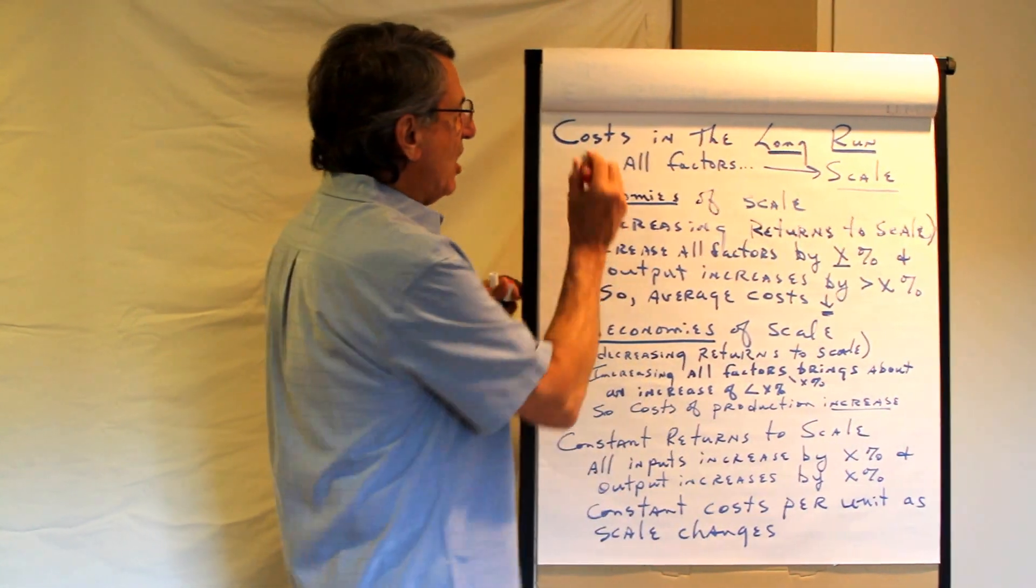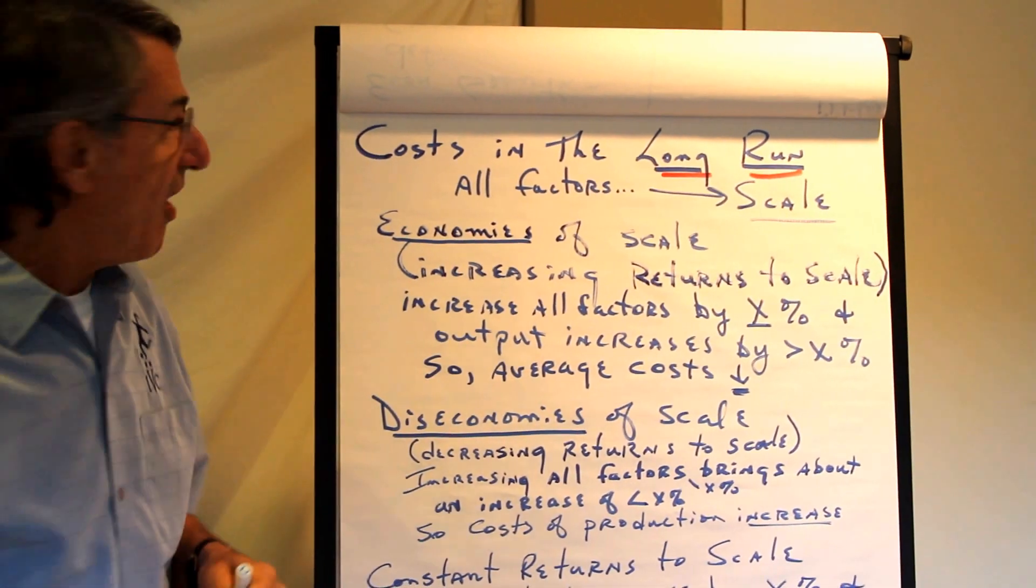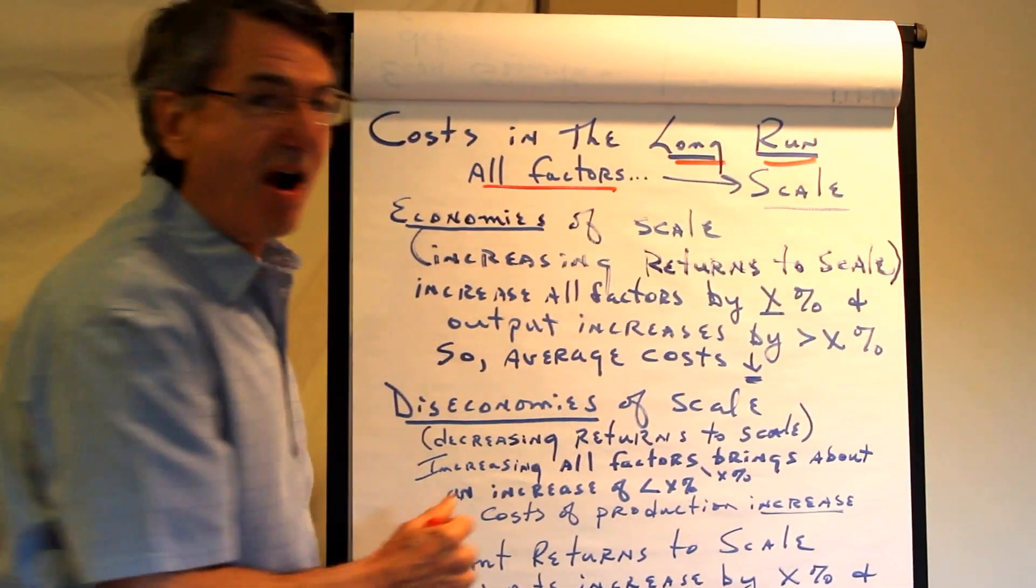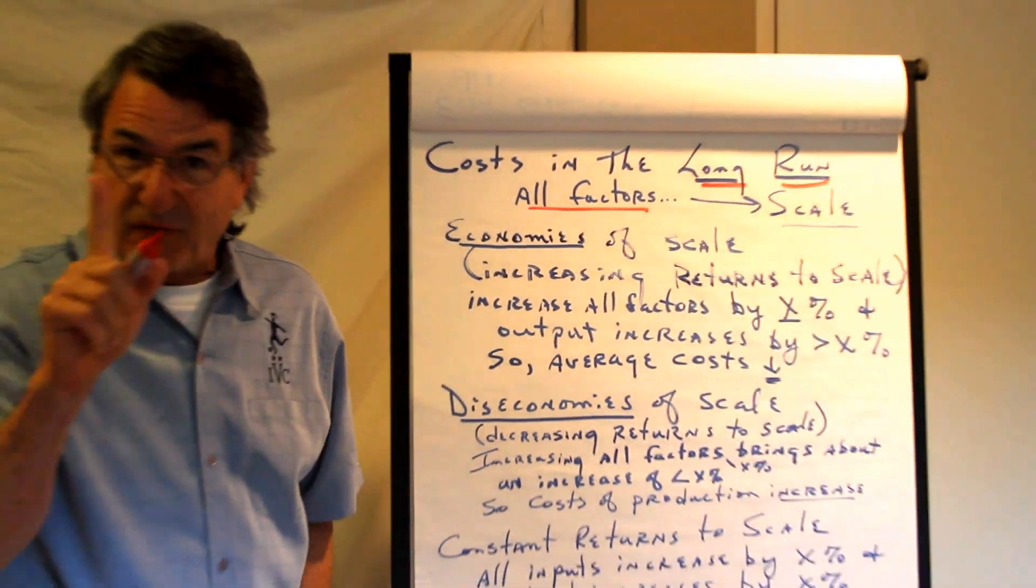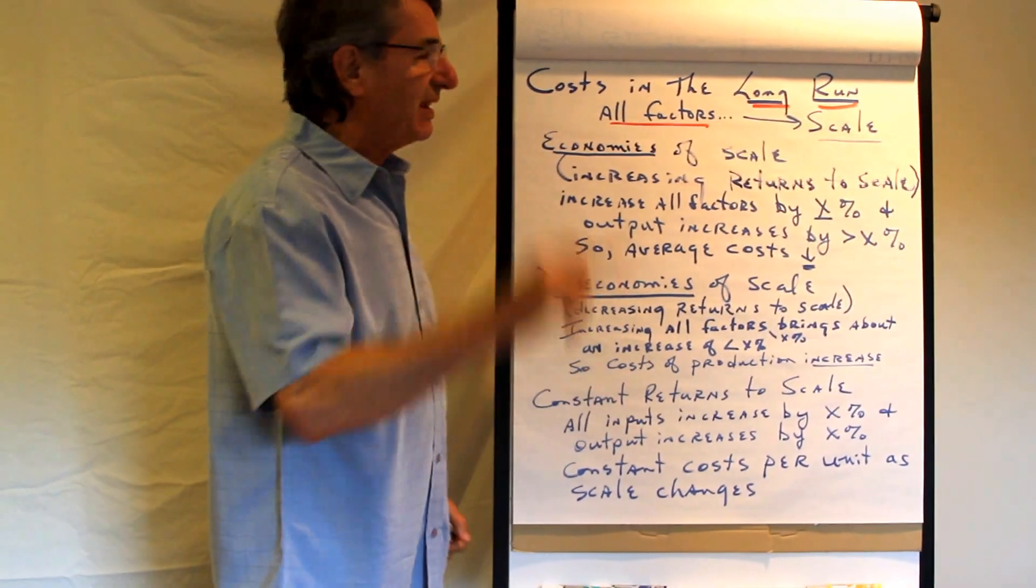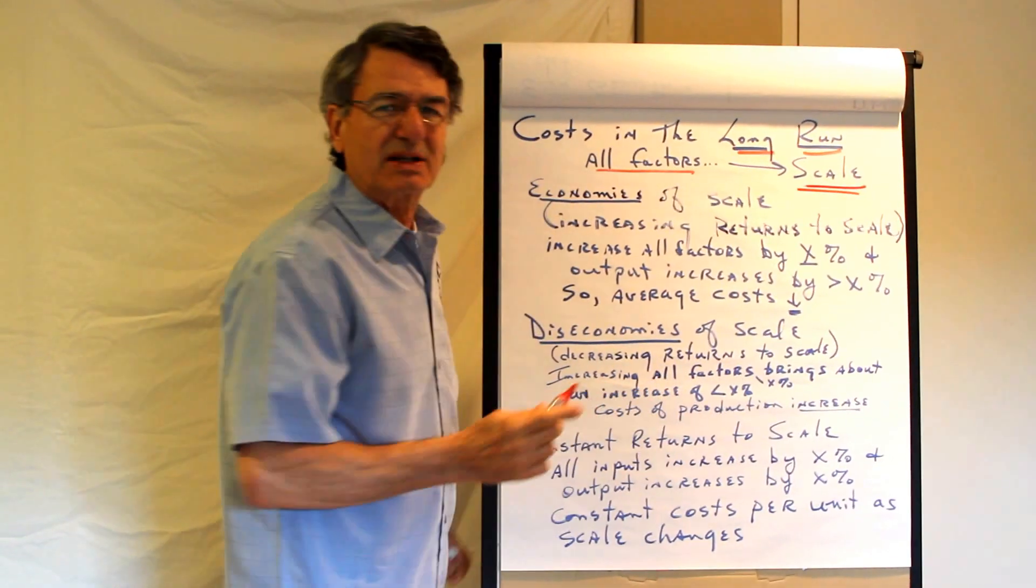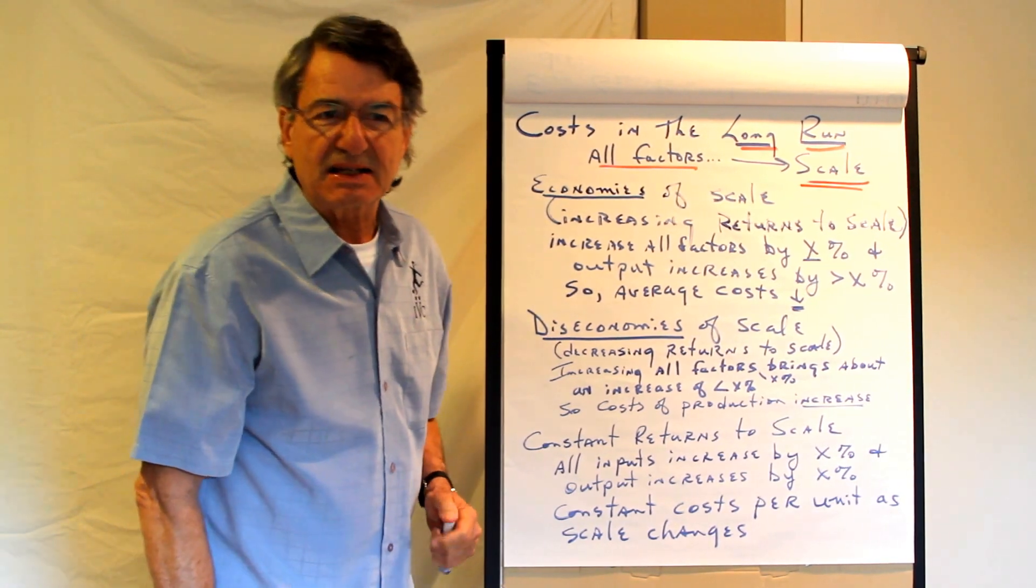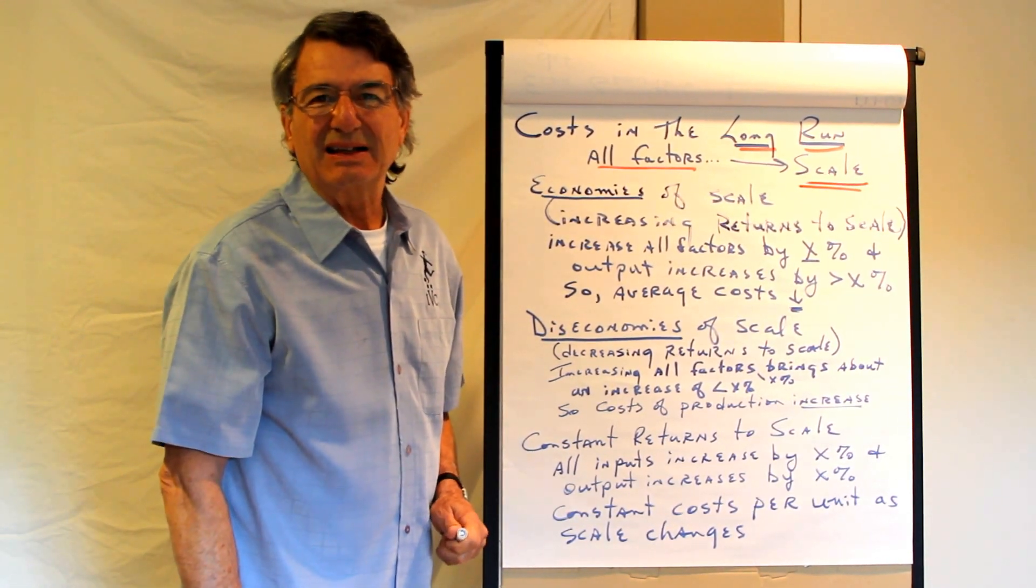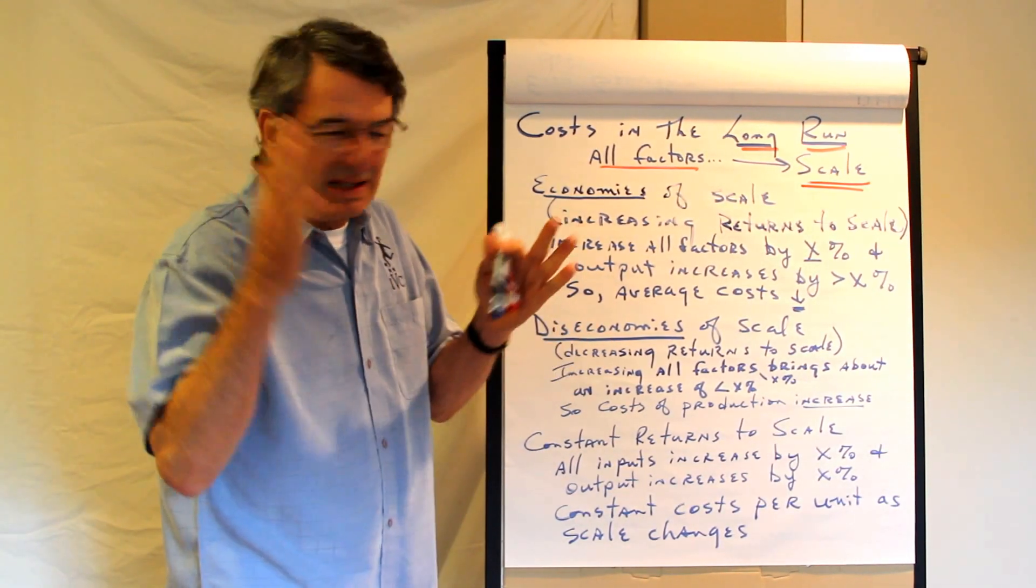Today we're talking about costs in the long run. In the long run all factors of production are variable. In the short run there's one fixed factor, but in the long run everything can be changed. So here we're talking about scale issues. What does scale mean here? Scale in economics means big stuff. Little stuff, big stuff. That's what it means.